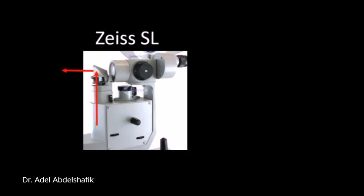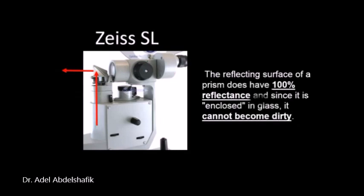In Zeiss slit lamp using a prism, light emitted from a lamp is reflected 90 degrees into the patient's eye. The reflecting surface of the prism does have 100% reflectance and since it is enclosed in glass it cannot become dirty. On the other hand, mirrors are fragile and are more susceptible to deposition of debris.